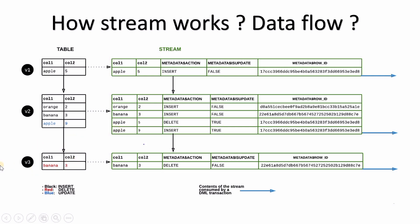In V3 stream, we delete 'Banana, 3'. For deletion, the stream stores METADATA$ACTION=DELETE and METADATA$ISUPDATE=FALSE, because no update is occurring — only a delete. So METADATA$ISUPDATE is TRUE only when an update is being performed; for inserts and deletes it is always FALSE.